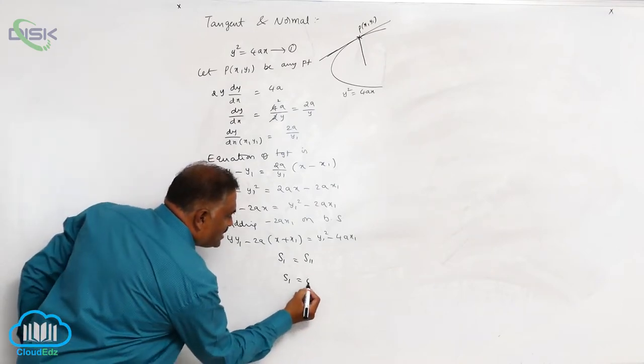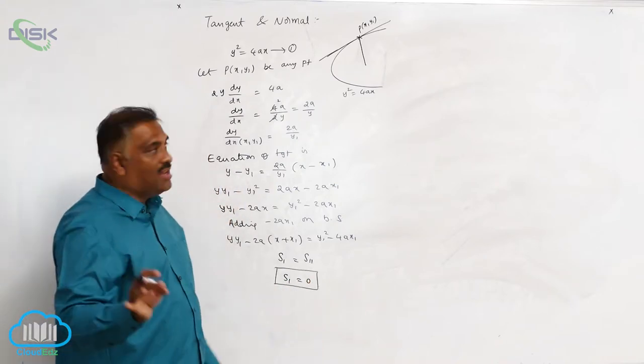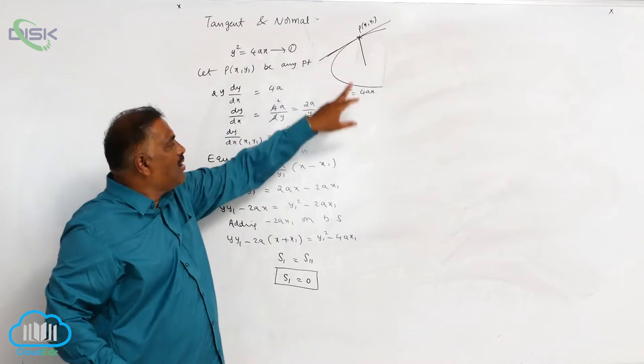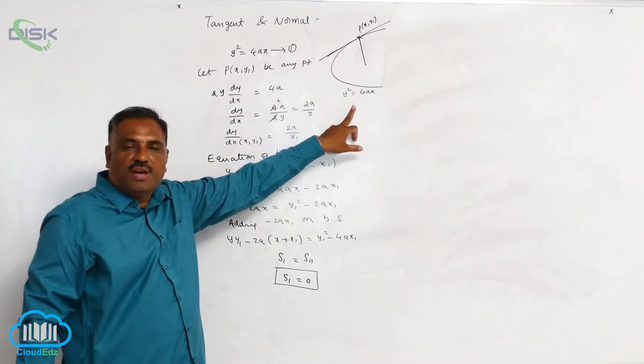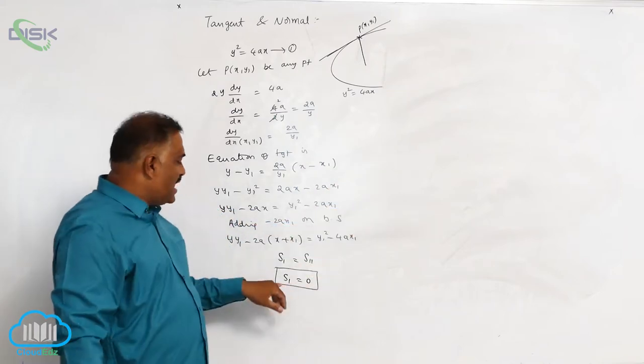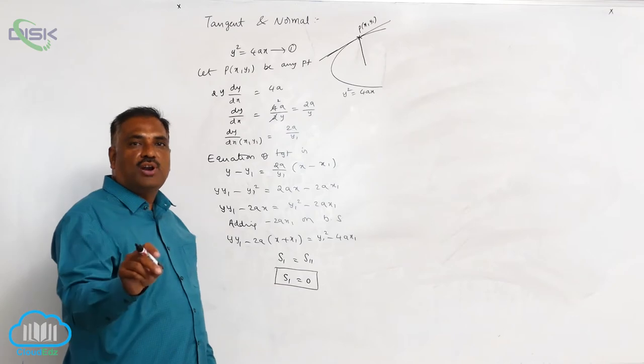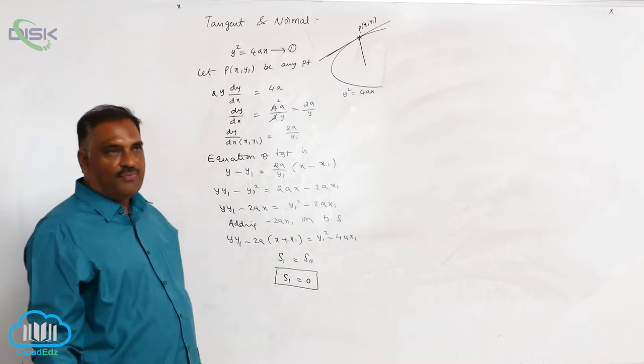That is why S1 is equal to 0. This is the equation of tangent at any point P on the parabola y square equal to 4ax. We studied the same equation, S1 equal to 0, is the tangent at the point in case of circles also.